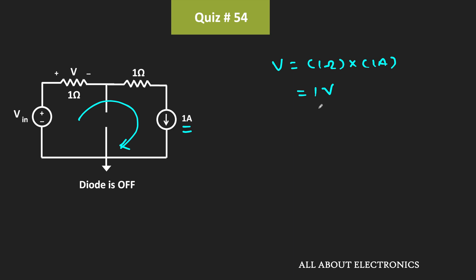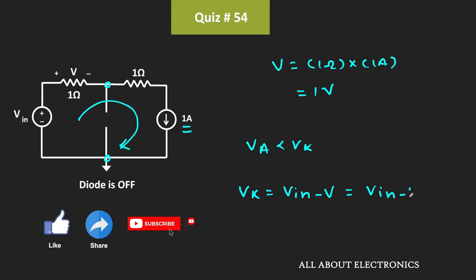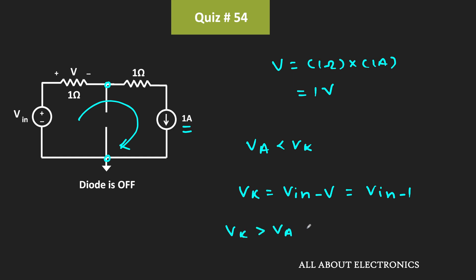This diode will be in the off condition whenever the voltage at the anode is less than the cathode. In this case, the voltage at the anode is equal to 0, while the voltage at the cathode Vk is equal to Vin − V, or in this case Vin − 1. So this diode will be in the off condition whenever Vk is greater than Va, or whenever Vin − 1 is greater than 0. From this we can say that whenever Vin is greater than 1 volt, the diode will remain in the off condition and V is equal to 1 volt.